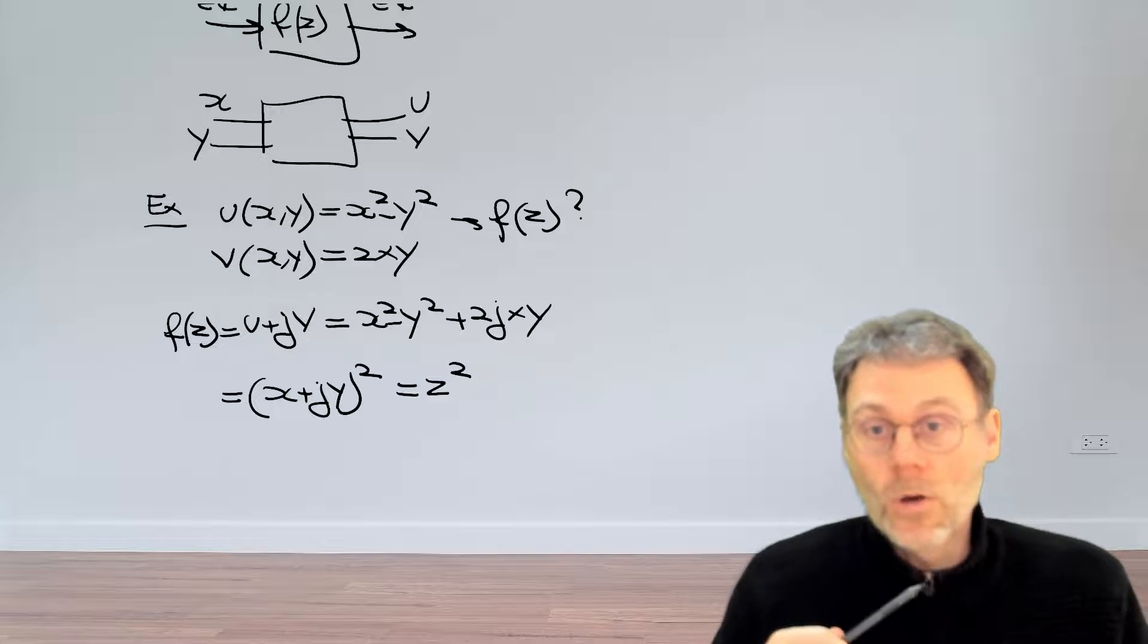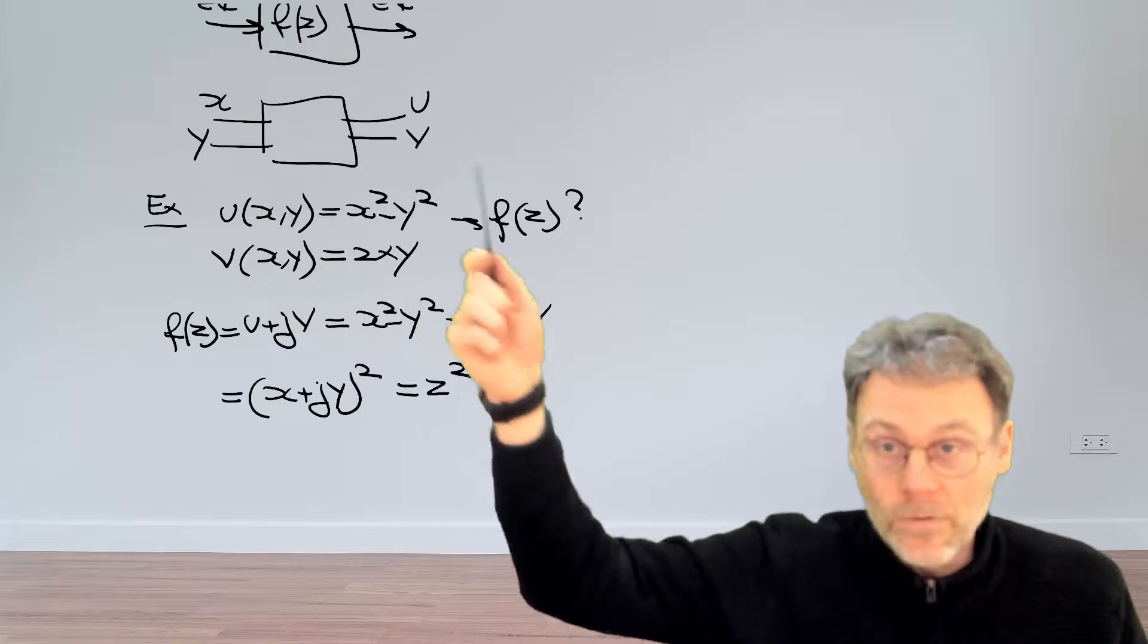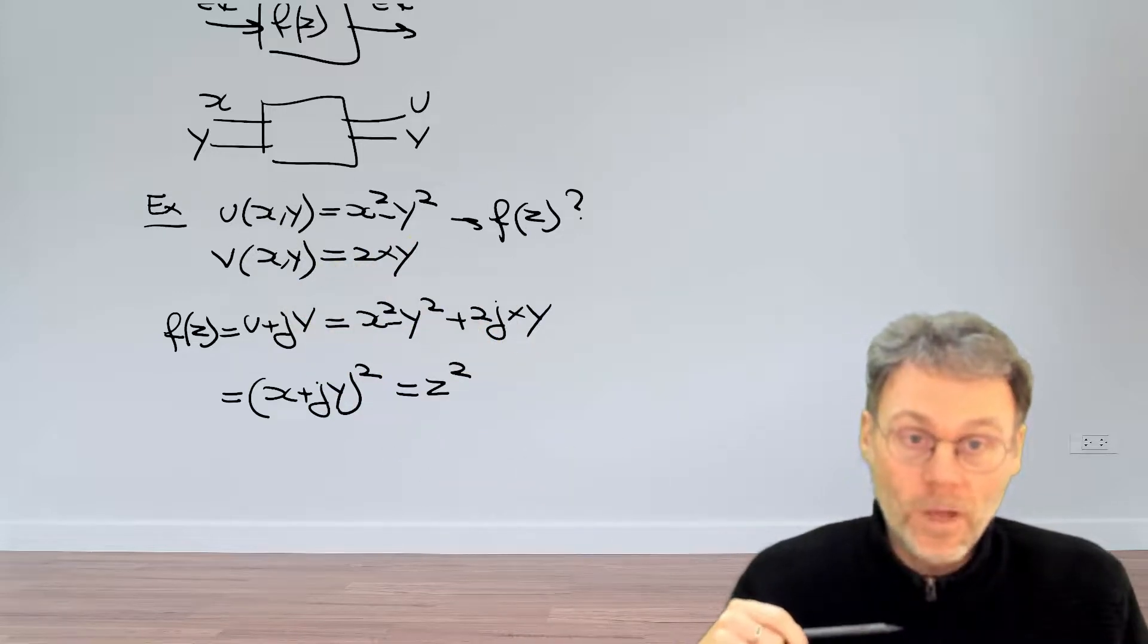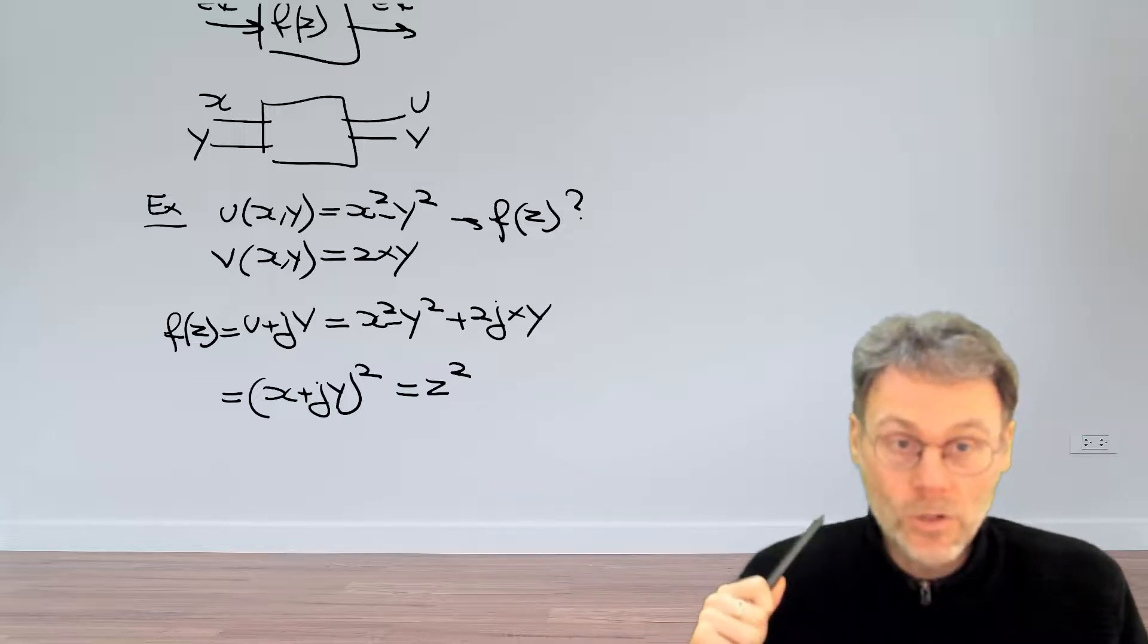So it's much more compact to write down a function f of z is z squared rather than explicitly providing the real part and the imaginary part as a function of x and y. So this is the familiar square function but in the complex domain.